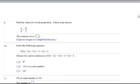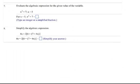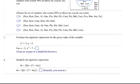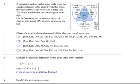For number six, a math tutor working with a small study group has classified students in the group by whether or not they scored 90% or above on each of the three tests. The results are shown in the Venn diagram to the right, and we want to find the set of students that scored 90% or above on exactly one test.